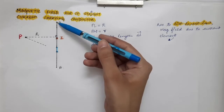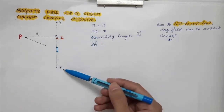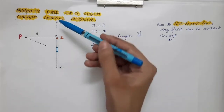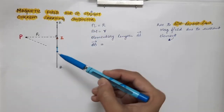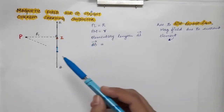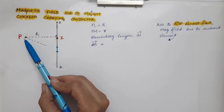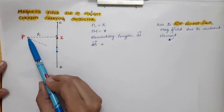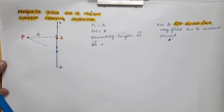Here I have taken a straight current-carrying conductor from A to B, and current is flowing through this conductor from B to A. This is the direction of the current flowing through this conductor. Now I want to find the expression of magnetic field at this observation point P — I want to find the expression of magnetic field over here.